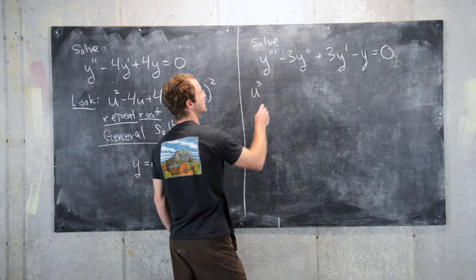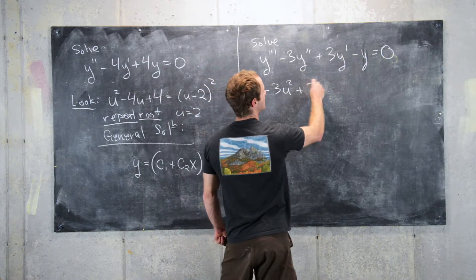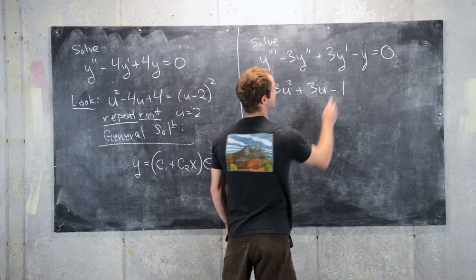in this case, u cubed minus 3u squared plus 3u minus 1.